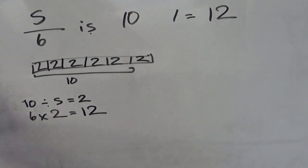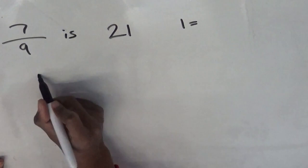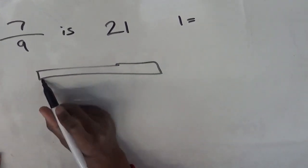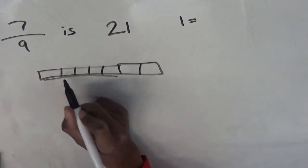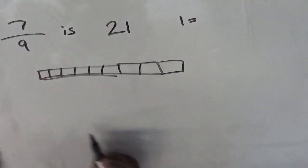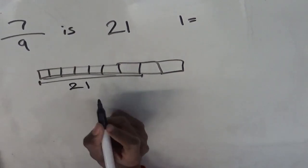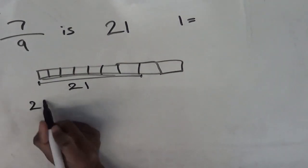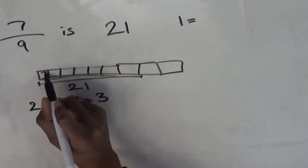Moving on to a harder sum, 7 ninths is 21. Now if we were to represent this like we did in the other ones, split it into 9 because the denominator is 9. And then if we were to underline 7 of these blocks, and label them as 21, we'd have to then do 21 divided by 7 to give us the value of 1 block, which is 3.